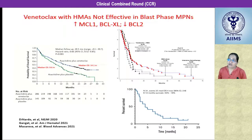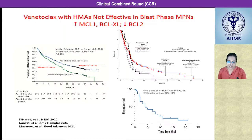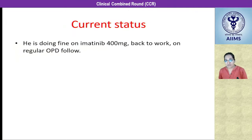We reviewed the literature on why venetoclax and hypomethylating agents failed in our patient. It was revealed that venetoclax plus azacitidine is not effective in the blast phase of MPNs because there is increased expression of MCL1 and decreased BCL2 expression, which is the main target of venetoclax. The current status of our patient: he achieved remission with imatinib therapy, is now doing fine on imatinib 400 mg, back to his work, and on regular follow-up.